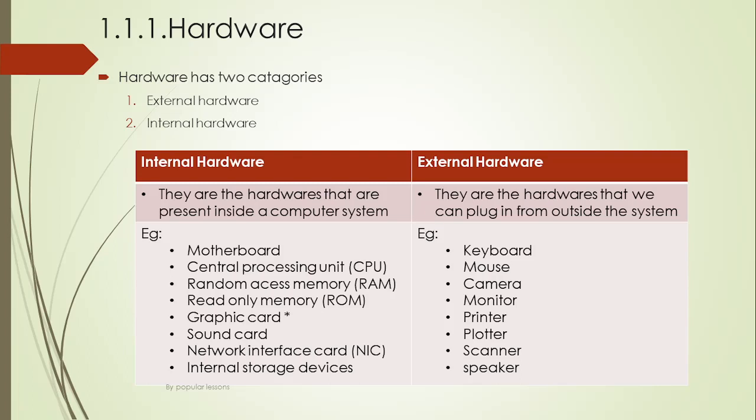External hardware refers to the hardware that we can plug in from outside the system. So anything plugged into the system from outside is known as external hardware. For example: keyboard, mouse, camera, monitor, printer, plotter, scanner, and speaker.